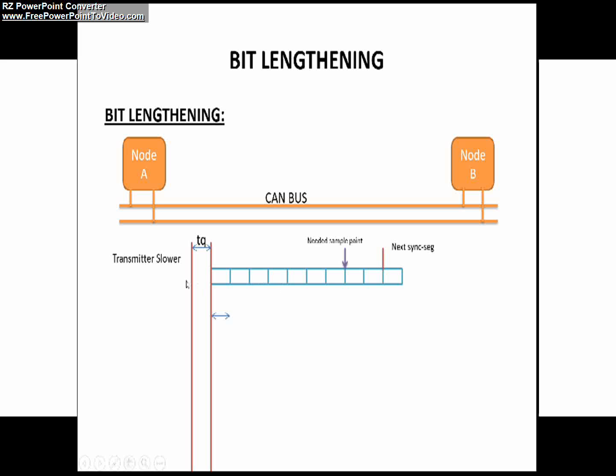Now because of this, the needed sample point for the receiver is occurring here when the transmitter is transmitting, but the actual needed sample point for the receiver should occur here as you can see in this slide.